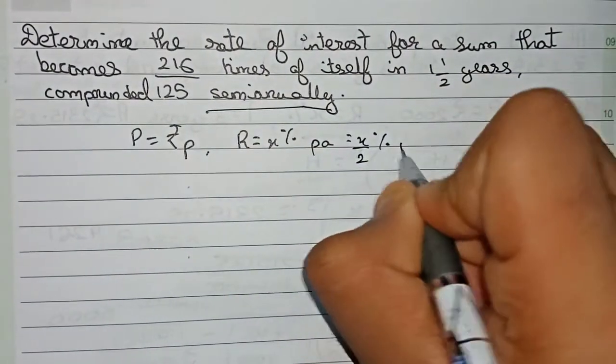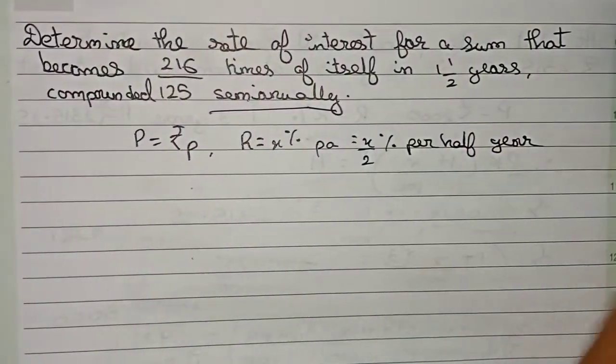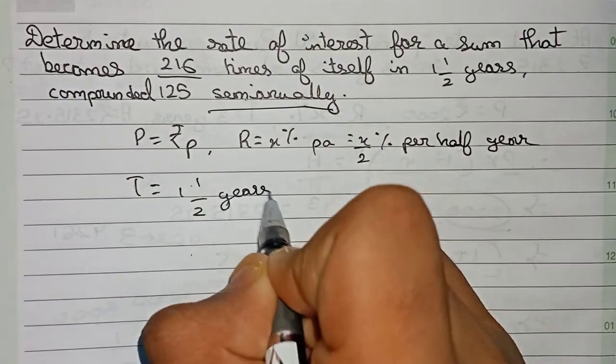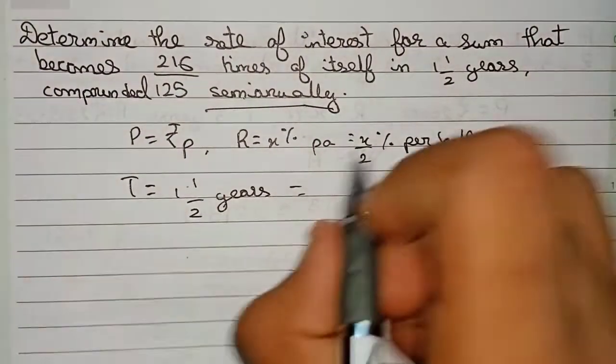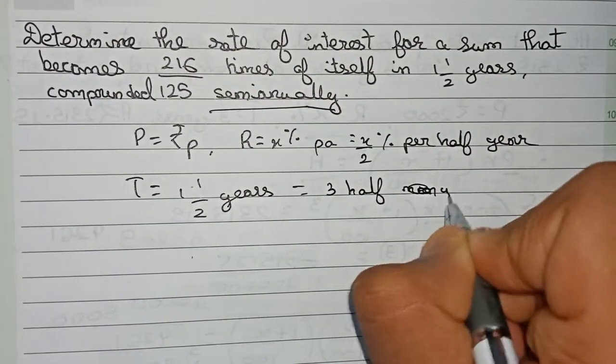Time is equal to given 1.5 years. If we do this sum in terms of six months, there will be three half years, so three half years.